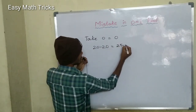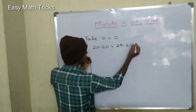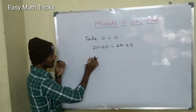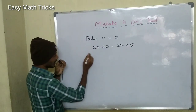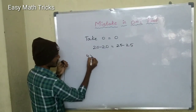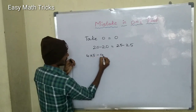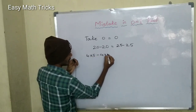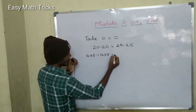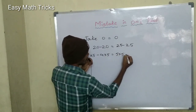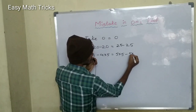Here we see 25 minus 25. Once you do that, 20 is equal to 25. It's 4 into 5. 4 into 5 is equal to 25. 5 into 5 minus 5 into 5.